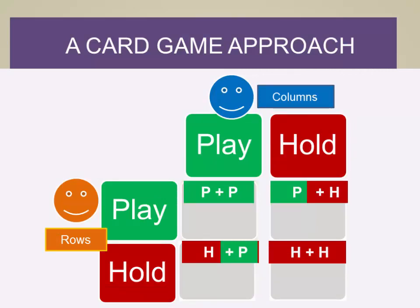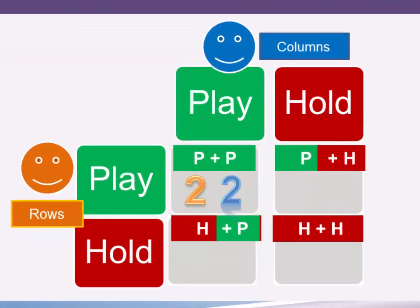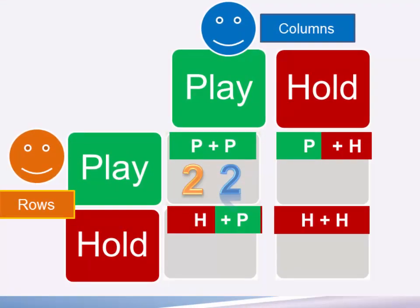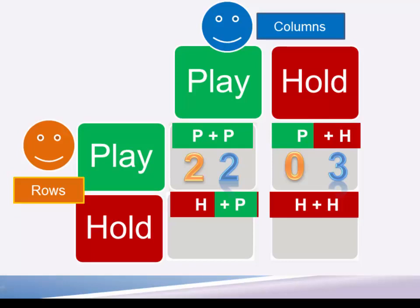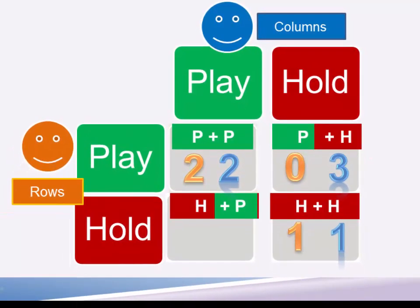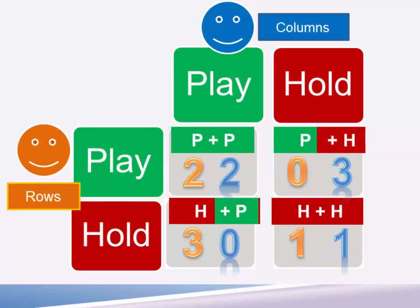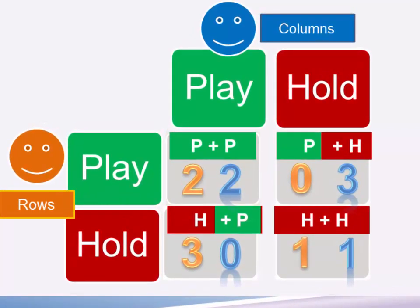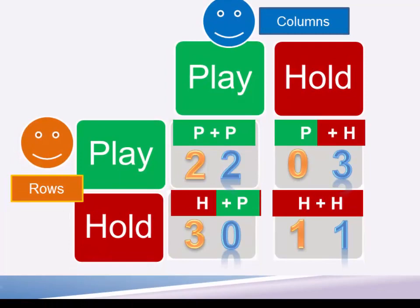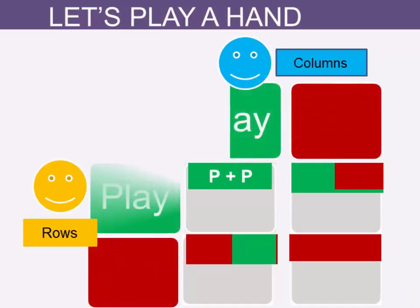Let's put in some scores, because it's not really a game unless there's an outcome. When orange plays and blue also plays, each player earns two points — shown by the orange two and the blue two. When orange plays and blue holds, orange gets zero points while blue gets three points. When they both hold, each player gets just one point. And when orange holds but blue plays, orange gets three points and blue gets zero. This is the payoff matrix that gives points to blue and orange based not just on what they do, but on what the other player does.